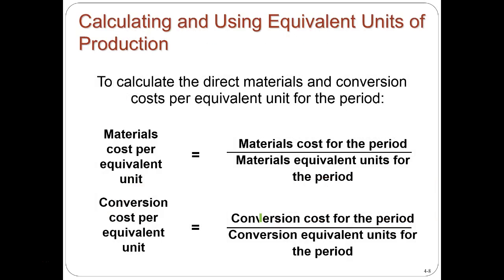To calculate direct materials and conversion cost equivalent units per period, the formula works as follows. For materials cost per equivalent unit, we take the total materials cost for the period — say, for the month — and divide it by the materials equivalent units for the period. That gives us the cost per equivalent unit, which we then use to make the allocation between departments.